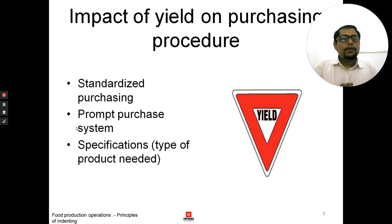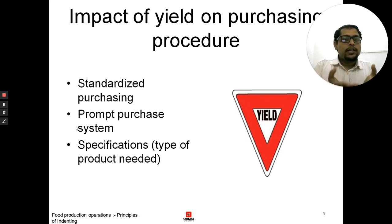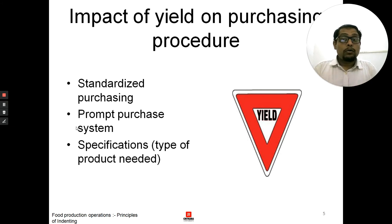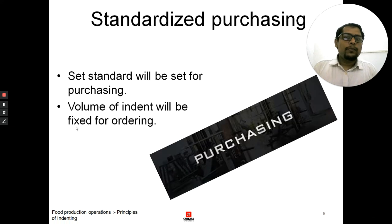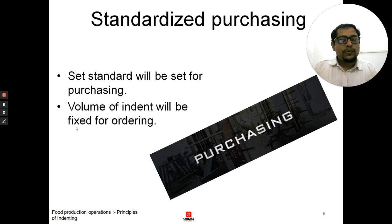The impact of yield on purchasing procedures: when you purchase, there are three impacts. The first is standardized purchasing, the second is prompt purchase system, and the third is specifications, which could relate to the type of product being needed. Starting with standardized purchasing — under this, standards will be set for purchasing.